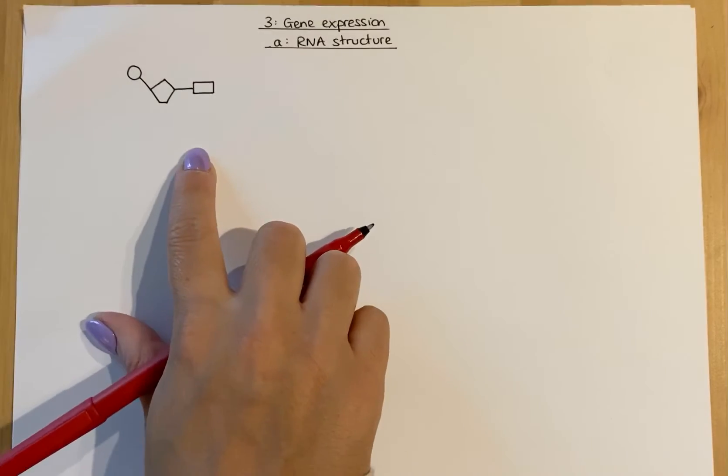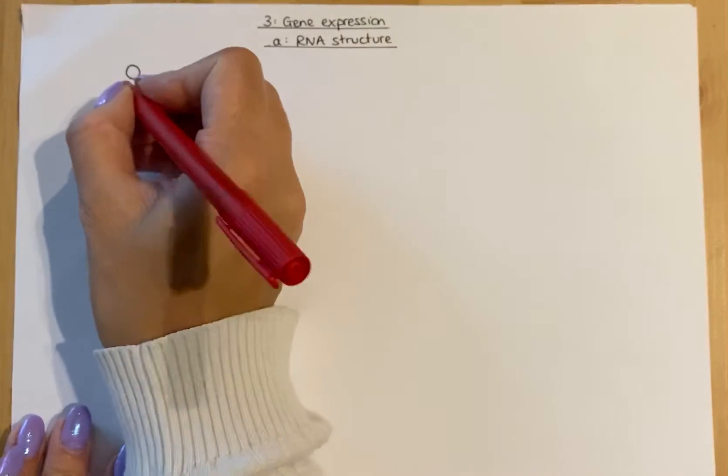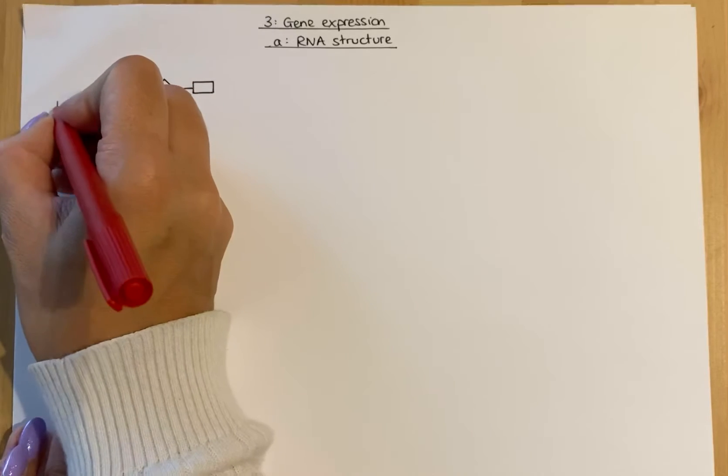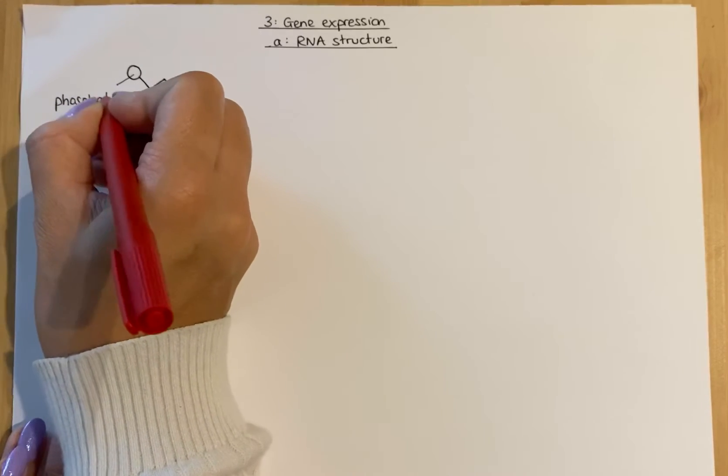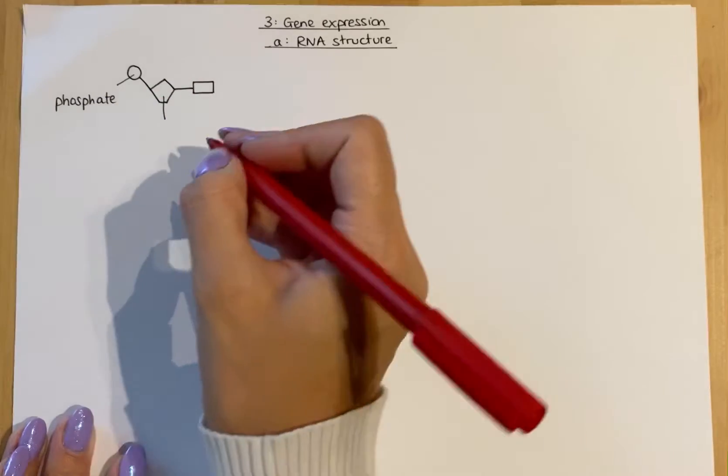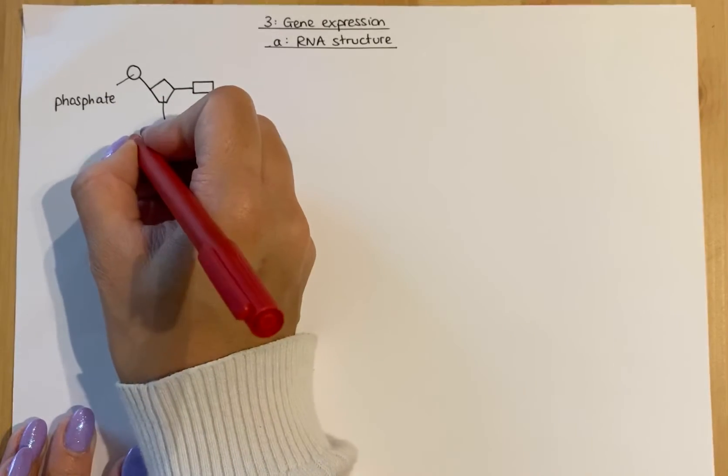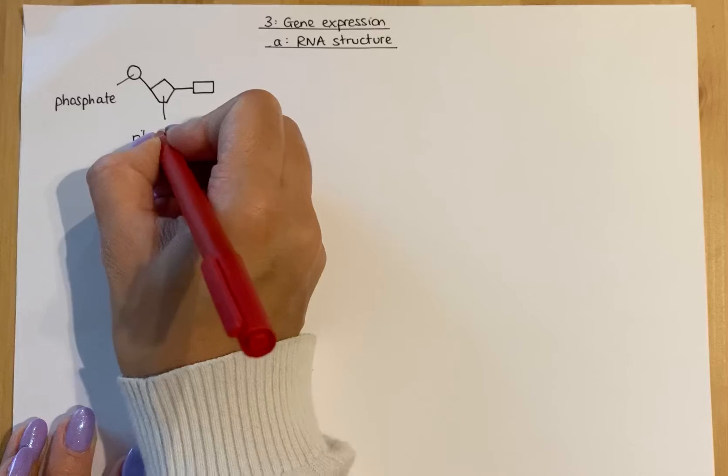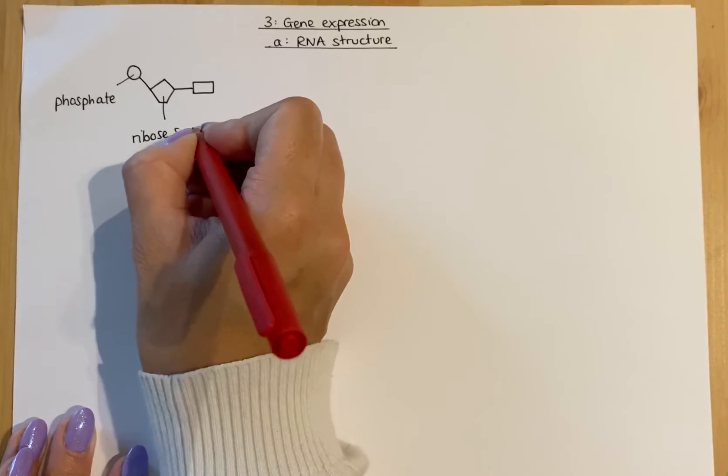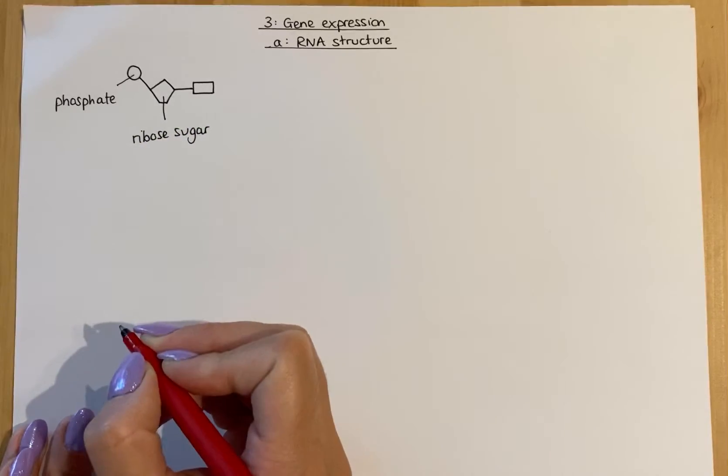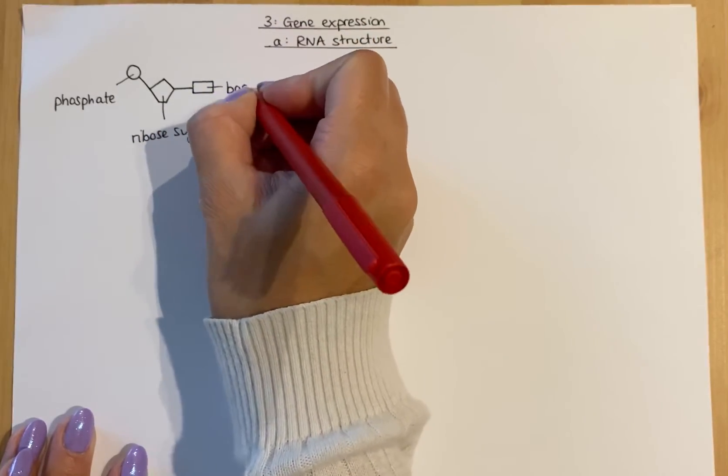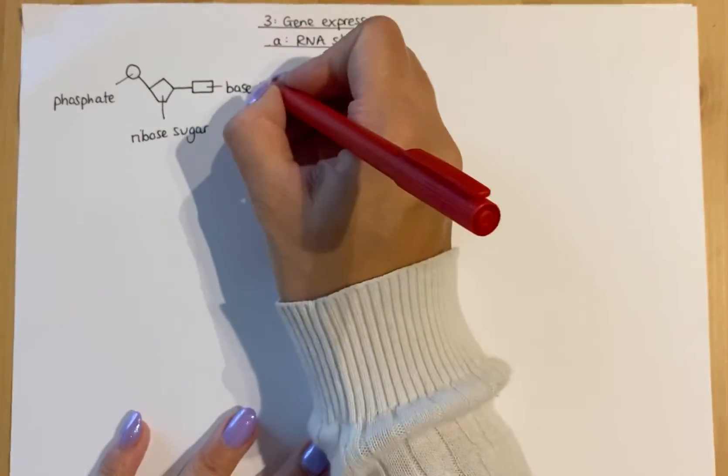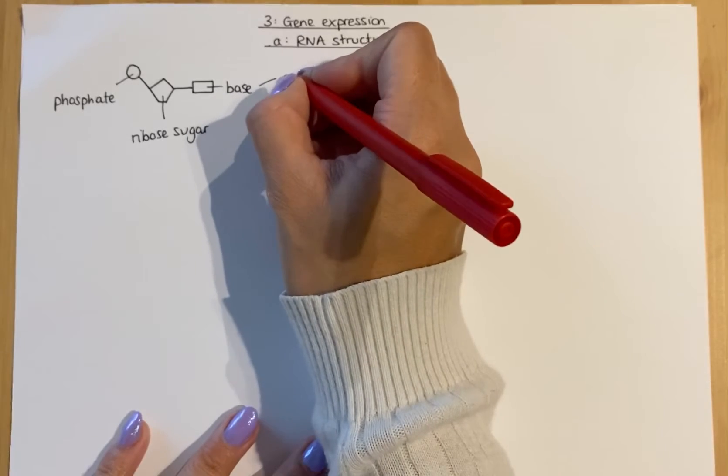The diagram I have here is a nucleotide. It's very similar in structure to DNA, so this would be a phosphate. This, rather than being a deoxyribose sugar, would be a ribose sugar. This part here is your base. However, in RNA you have one slightly different base.